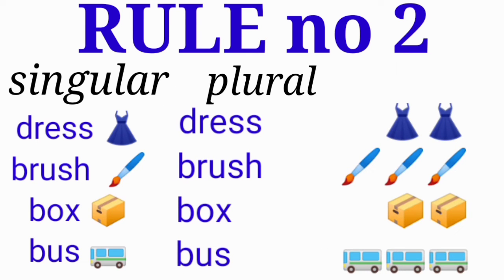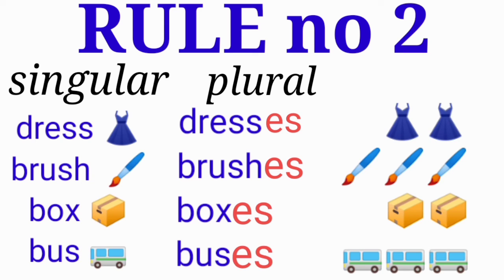we spell them out: D-R-E-double S-E-S, dresses. B-R-U-S-H-E-S, brushes. B-O-X-E-S, boxes. B-U-S-E-S, buses.